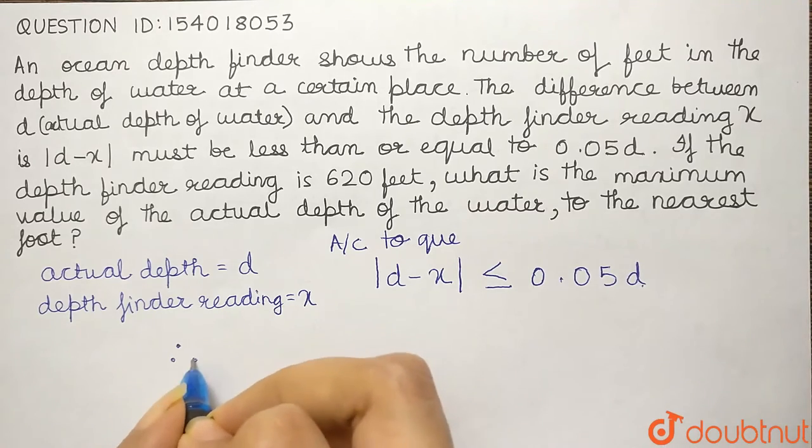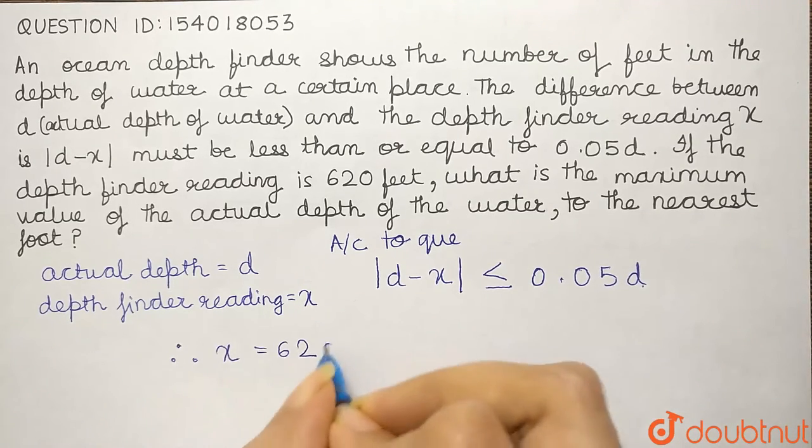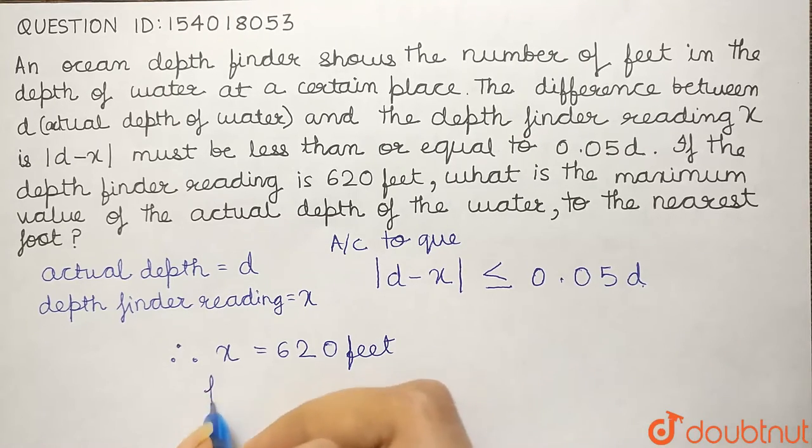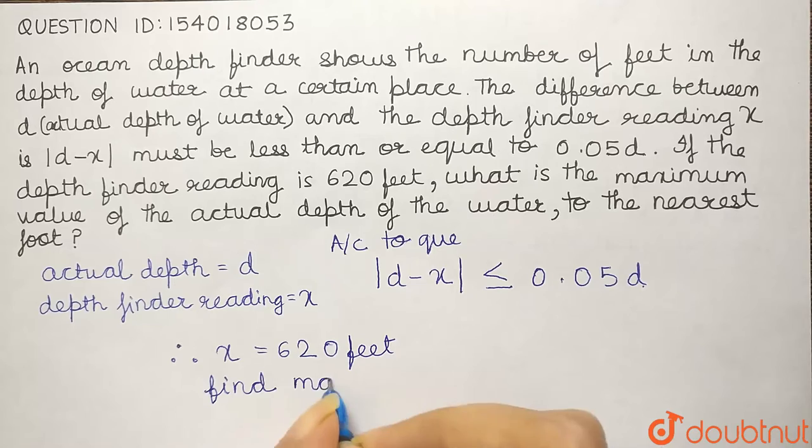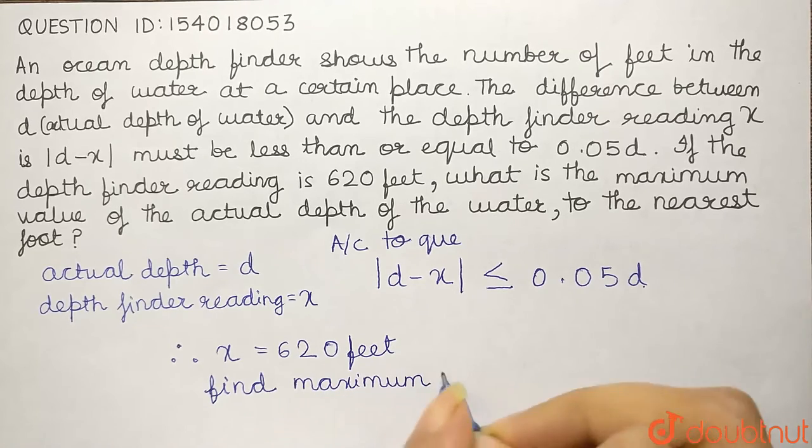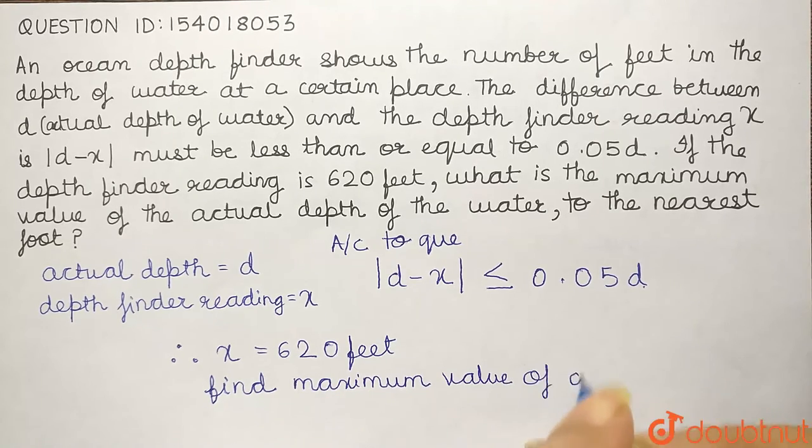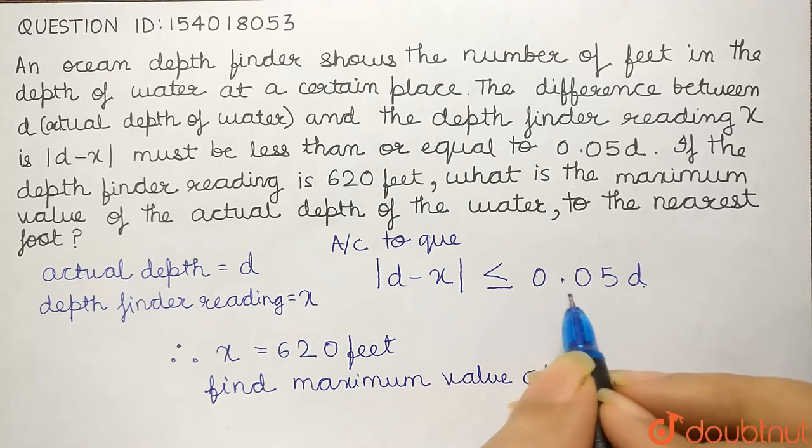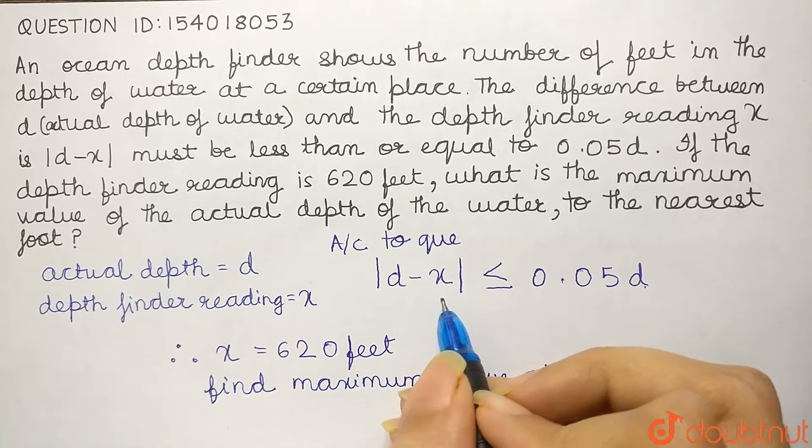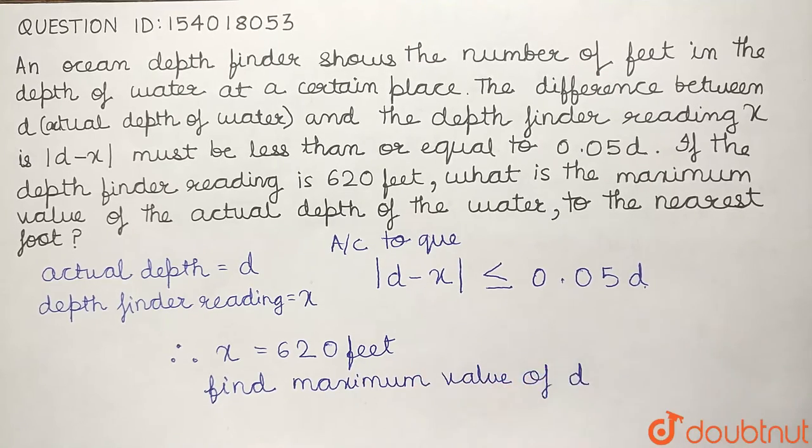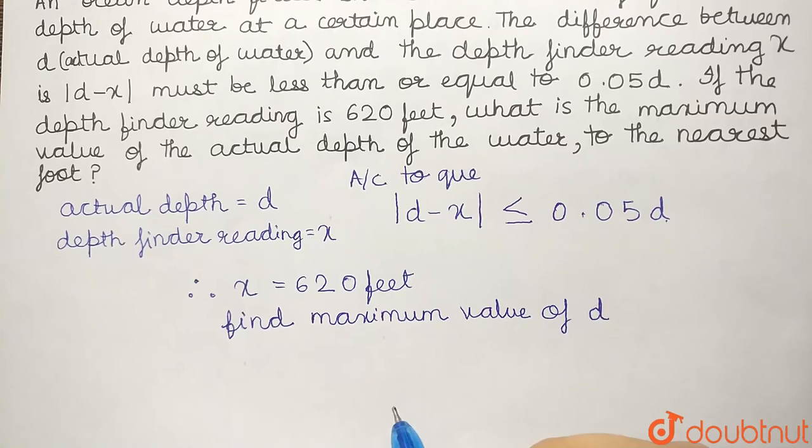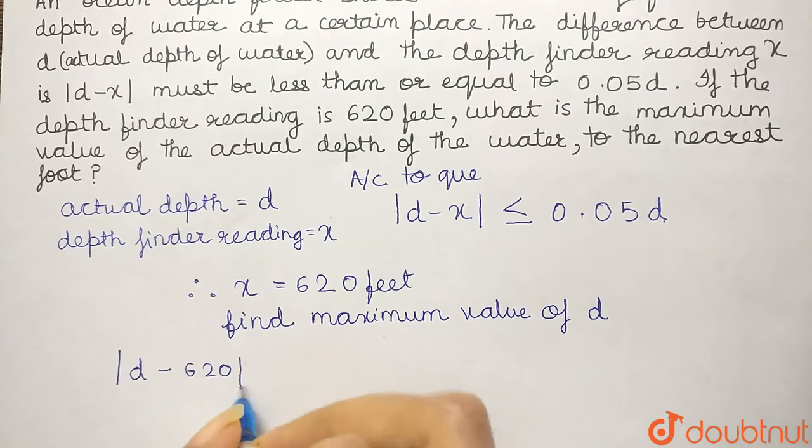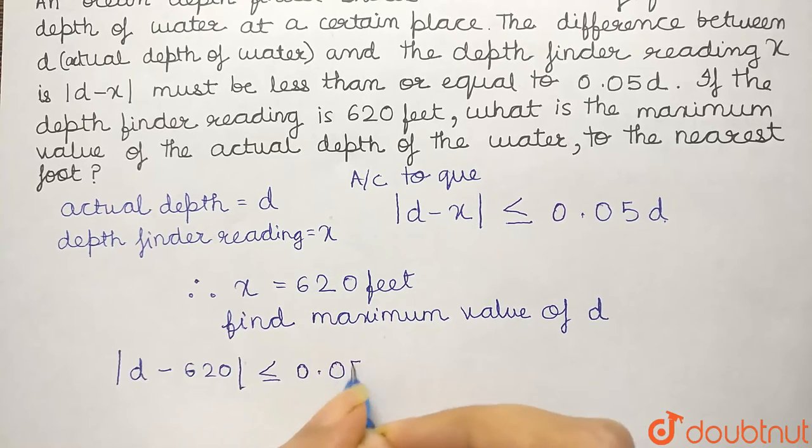Therefore, we see X is given to be 620 feet. Now, we have seen that D and X relationship has been described by this equation and X is given to be 620. Now, we will substitute X as 620. So, we will get modulus of D minus 620 must be less than or equal to 0.05D.